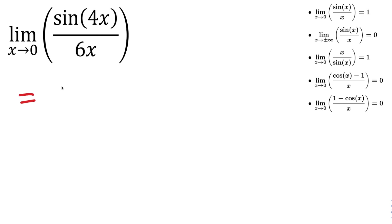And if you plug in 0, you get sine of 4 times 0 is 0, so I'll put 0, divided by 6 times 0. And sine of 0 would give us 0, and 6 times 0 is 0.